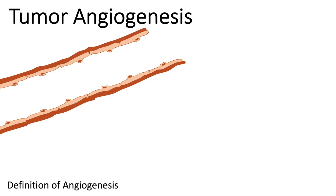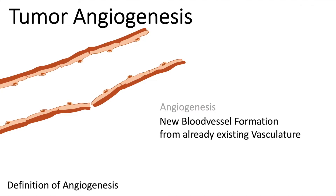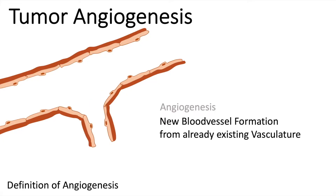Let's define what angiogenesis is. Angiogenesis is the formation of a new blood vessel from pre-existing vasculature — so there already is a blood vessel. Angiogenesis describes the sprouting procedure.